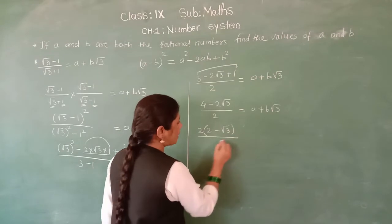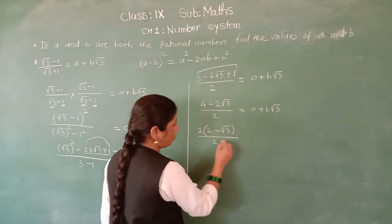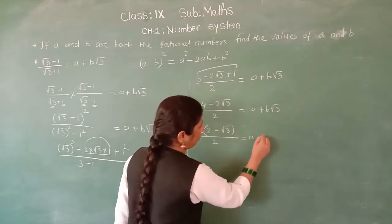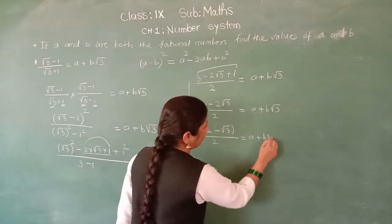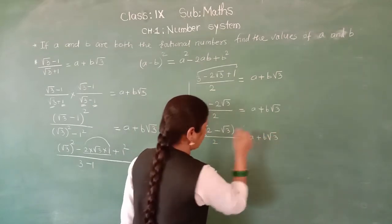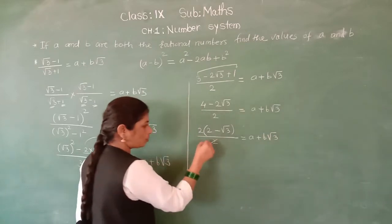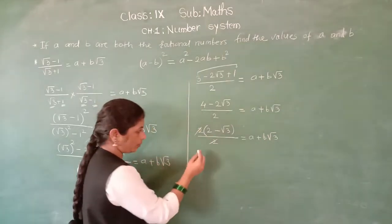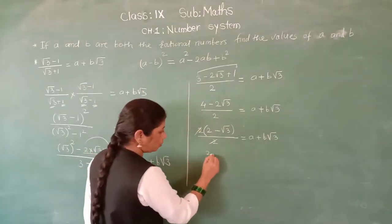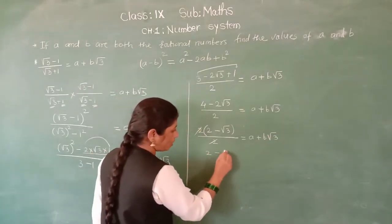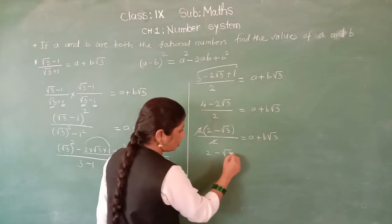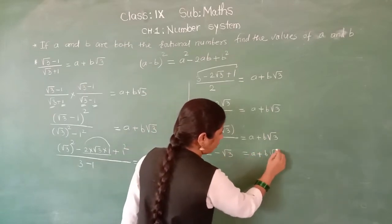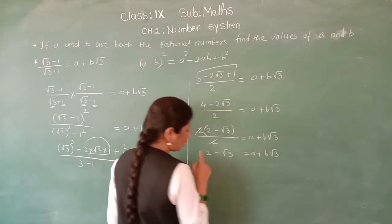Upon 2 equals A plus B root 3. This 2 in the numerator and 2 in the denominator will get cancelled. So what is the meaning? 2 minus root 3 equals A plus B root 3.